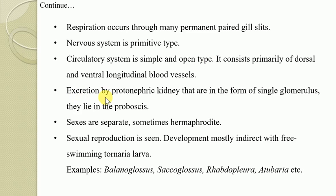Excretion is by protonephric kidney, which is the most basic form of kidney among chordate organisms. The protonephric kidney is in the form of a single glomerulus lying in the proboscis. The sexes are separate, though sometimes they may be united to form a hermaphrodite condition. The gonads — testes or ovaries — vary in number from one to several pairs, varying from species to species.